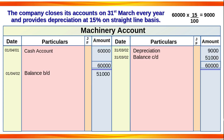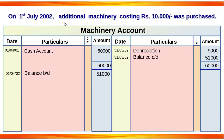On 1st July 2002, the additional machinery costing Rs. 10,000 was purchased. This is the second year of the account. The additional machinery purchase is posted to the machinery account via cash account, and depreciation is calculated from the date of purchase.